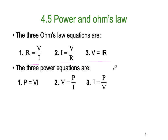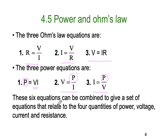We've also learned the three power equations. The first is power equals voltage multiplied by current. The second is voltage equals power divided by current. And thirdly, current equals power divided by voltage. The common factor is that they all involve power. By putting these six equations together in different combinations, we get a set of equations relating the four quantities of power, voltage, current, and resistance — giving us a total of 12 equations, which make up the Ohm's Law wheel.